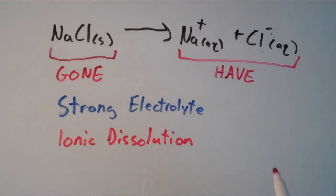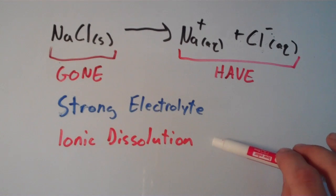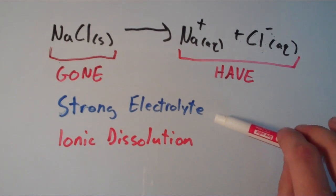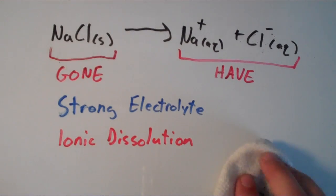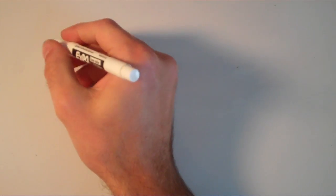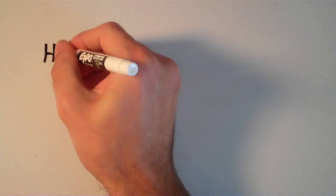Remember, molecular dissolution results in a non-electrolyte, but ionic dissolution actually results in a strong electrolyte. Now let's go over another scenario. Suppose I have an acid such as HCl, and I want to put that in water.